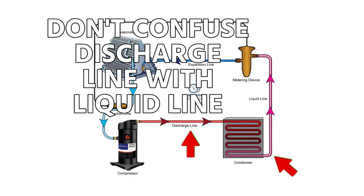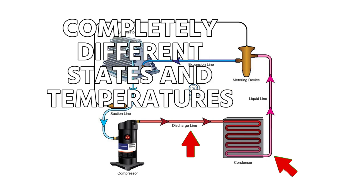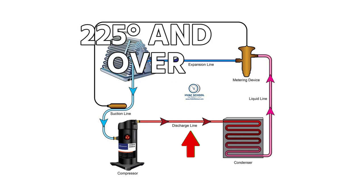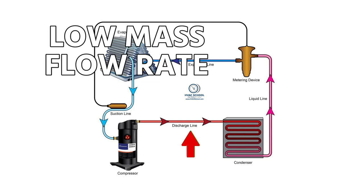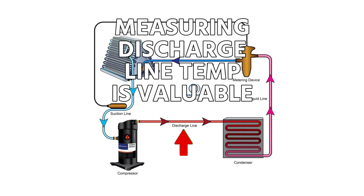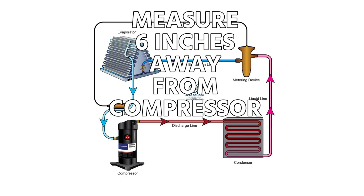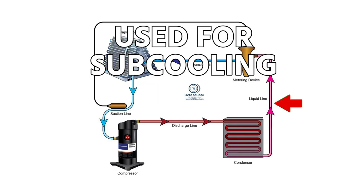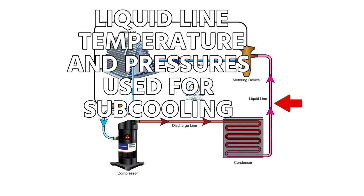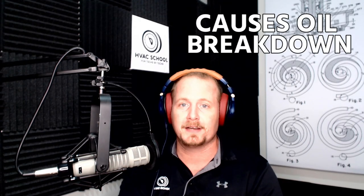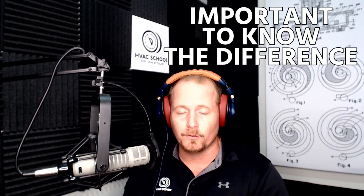Key thing here: don't confuse your discharge line with your liquid line. They're both on the high pressure side, but they are completely different states of refrigerant and temperatures. Discharge line is going to be below 225 degrees. If you ever measure a discharge line temperature of 225 or over, that's an indication of a problem — could be due to low mass flow rate through the compressor, high return temperatures or high superheats. Measuring discharge line temperature is valuable; measure it six inches away from the compressor and make sure it's below 225 degrees. Liquid line temperature and pressure is used for subcooling. Your discharge line temperature helps us see if potentially we have a problem with compressor overheating. It's important to know the difference, and hopefully you found this helpful.